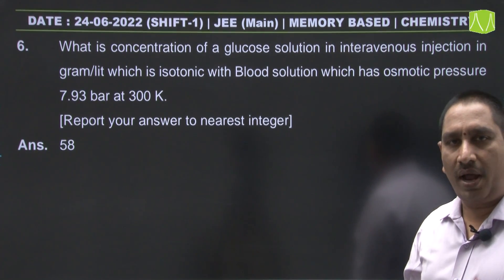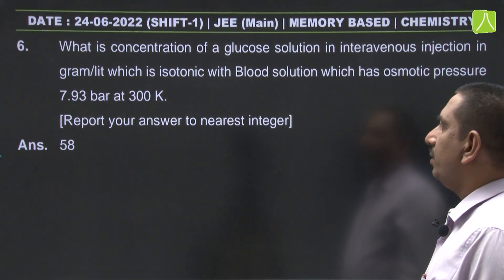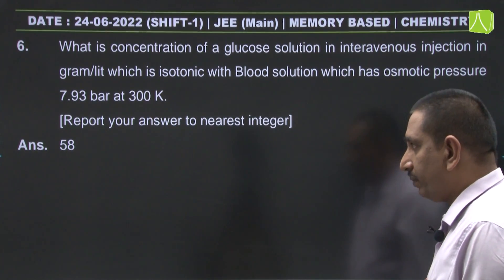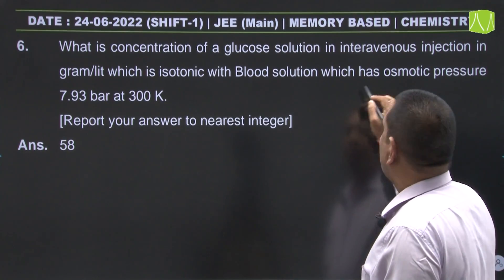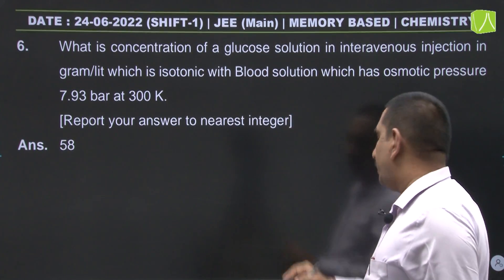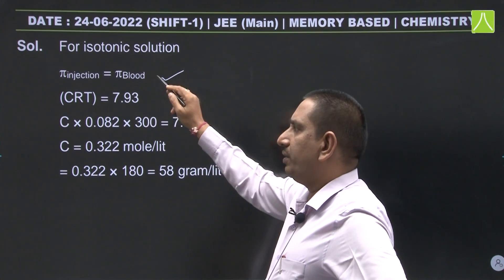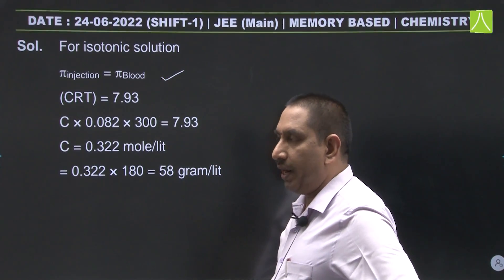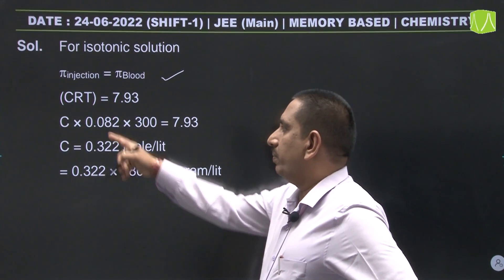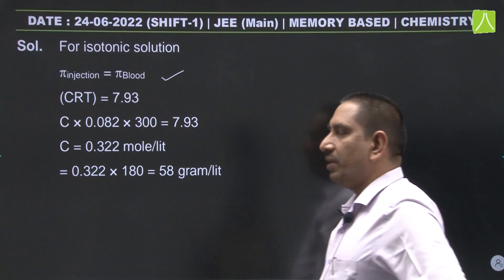Another question is from solution colligative properties: what is the concentration of glucose solution for intravenous injection in g/L that is isotonic with blood, which has osmotic pressure 7.93 bar at 300 K? Isotonic solutions have the same osmotic pressure. Equating osmotic pressures and using π = CRT, substituting the data gives concentration = 58 g/L.